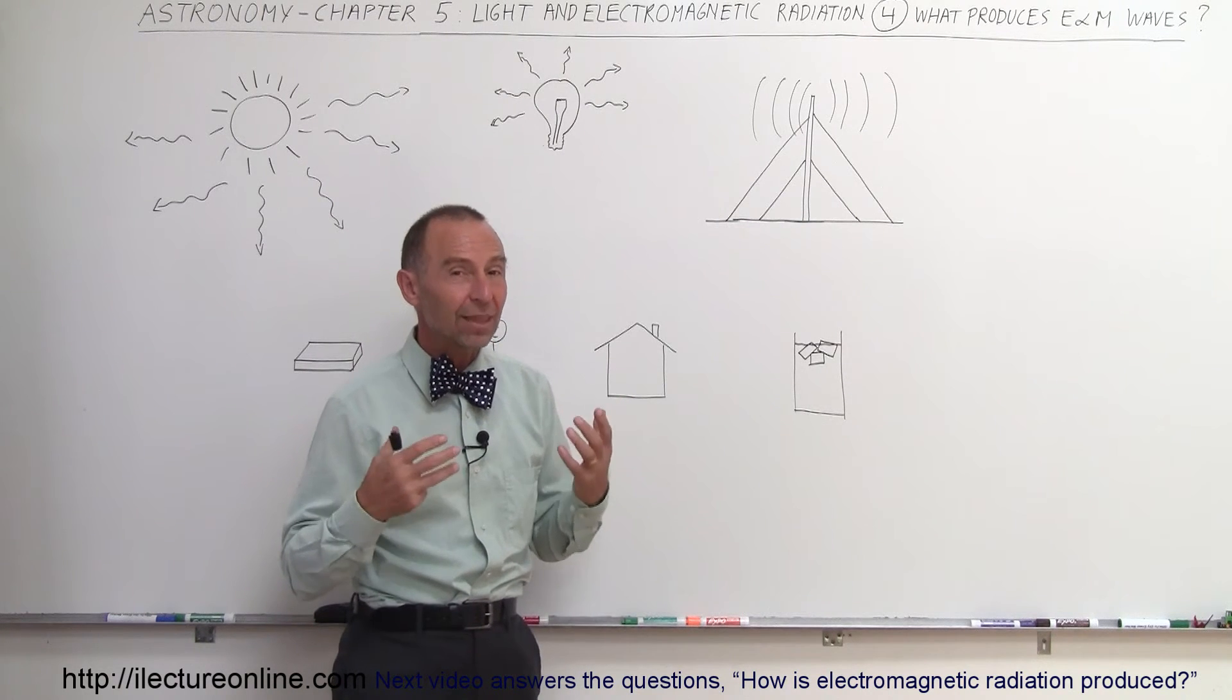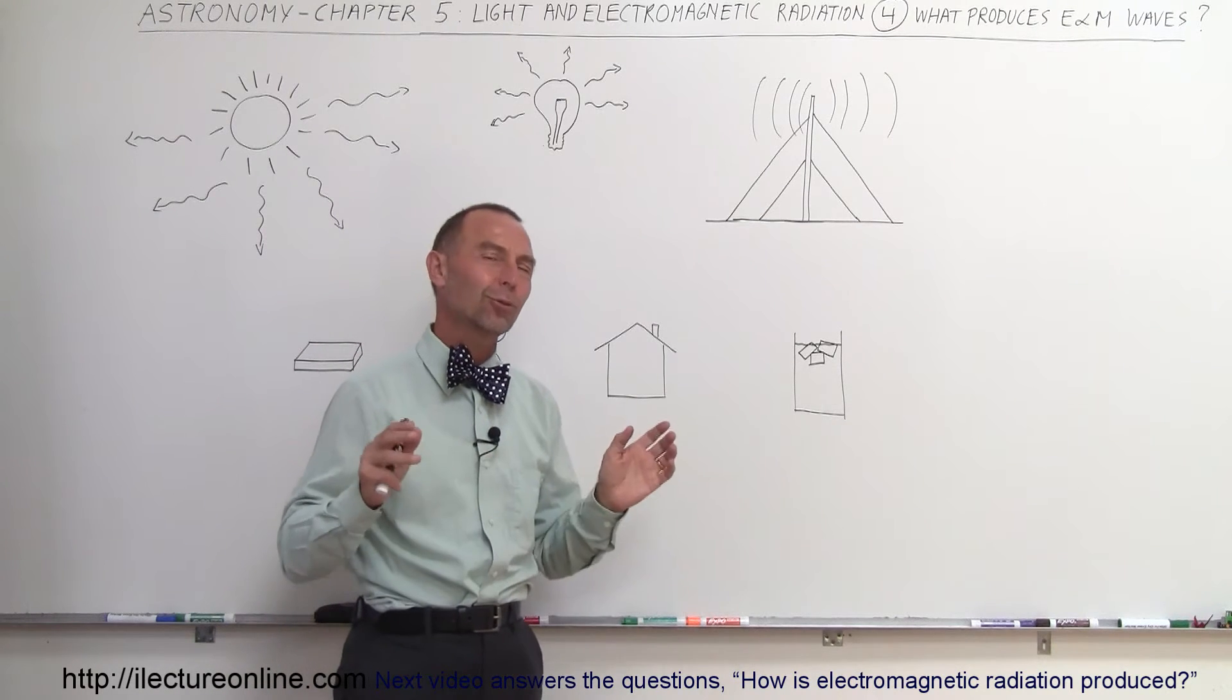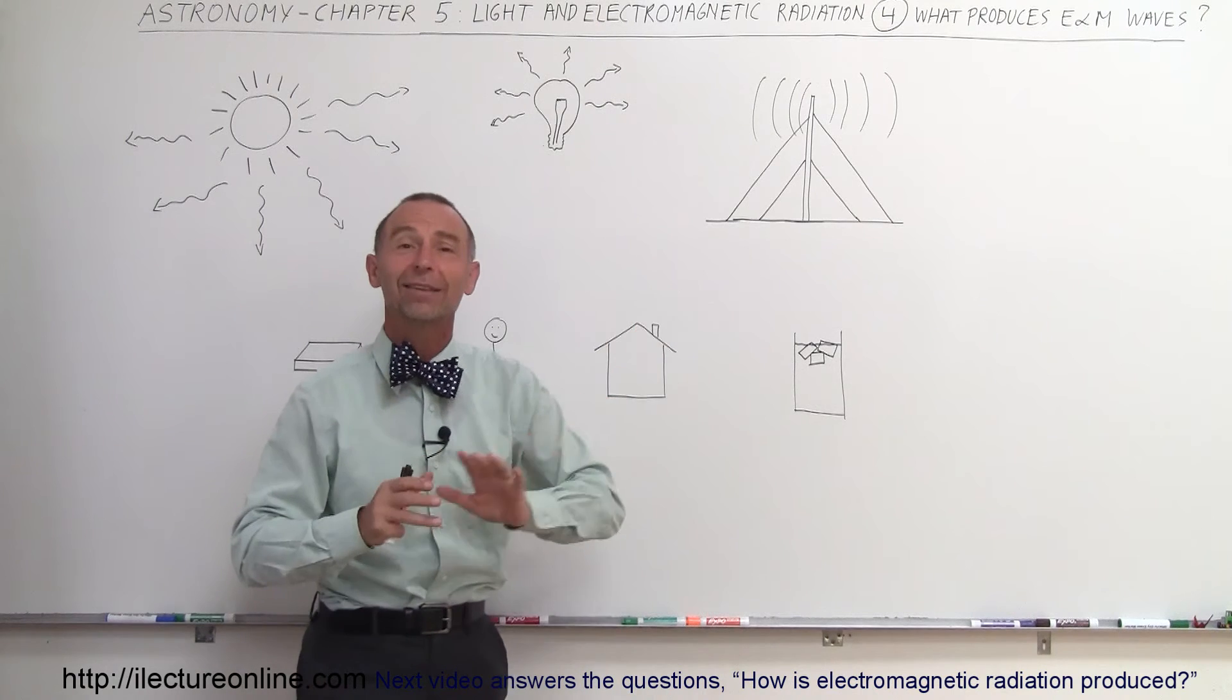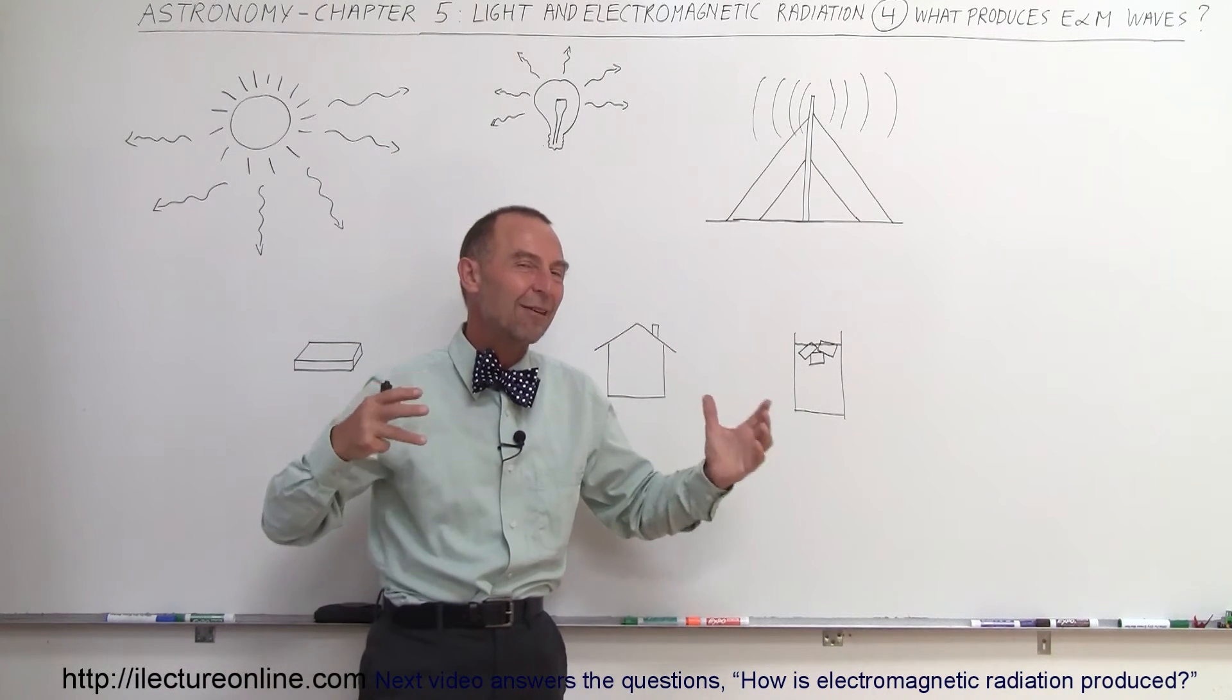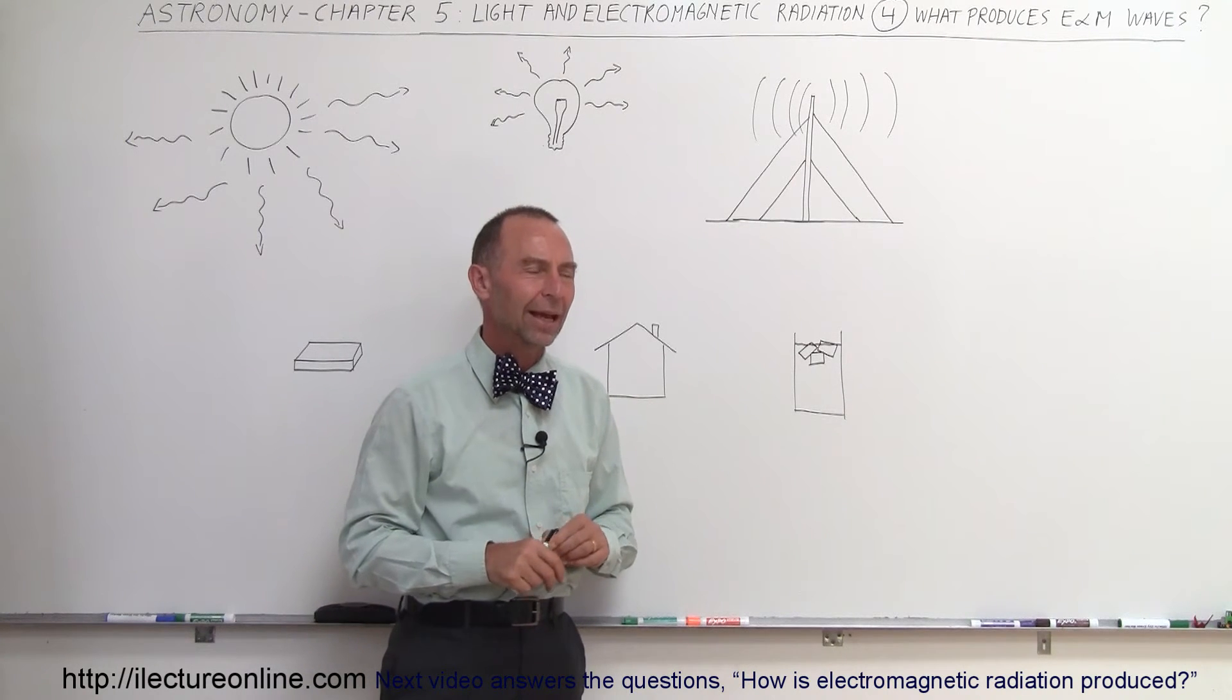Bottom line, everything in the universe, without exception, produces electromagnetic radiation. Of course, when I say without exception, I may be saying something wrong, that maybe there's something out there that doesn't produce electromagnetic radiation, but as far as I know, everything in the universe produces electromagnetic radiation, and that is surprising.